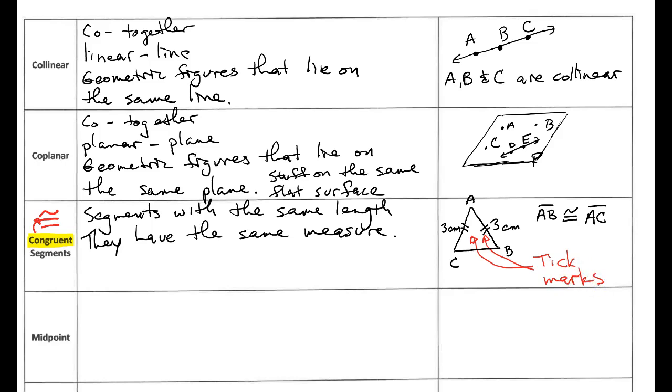So these two little marks are called tick marks. And again they're used to show congruency. And we will use them all the time. And we are going to expect you to use them as well.